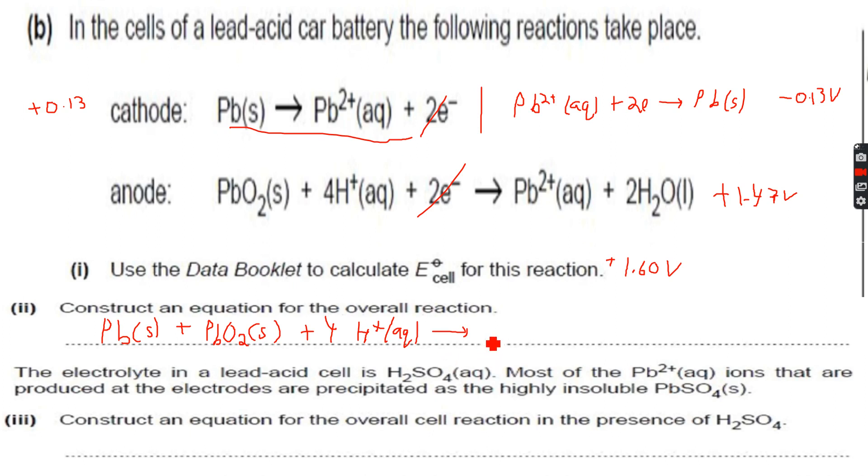The Pb2+ ions are both on the right hand side, so they add up to give 2Pb2+(aq) plus 2H2O(l). Now we have constructed the overall equation.